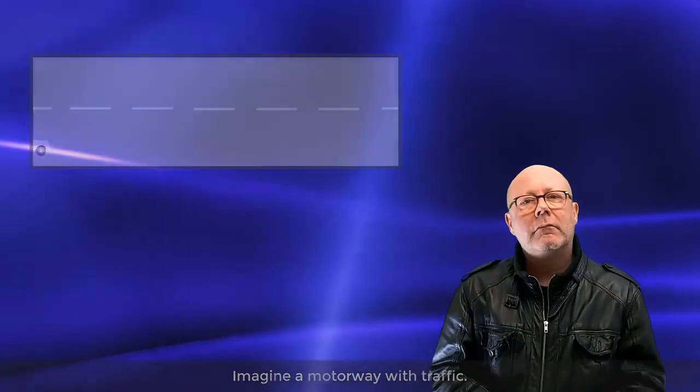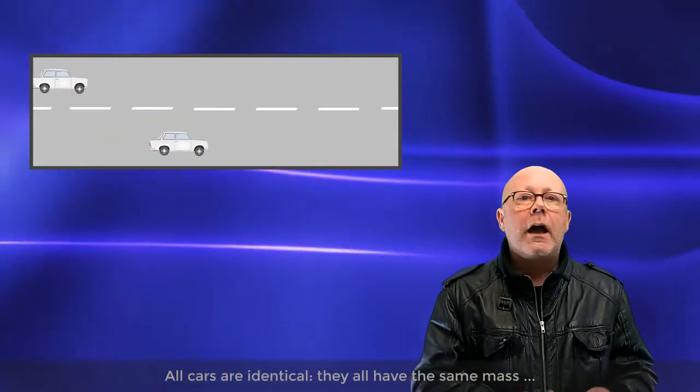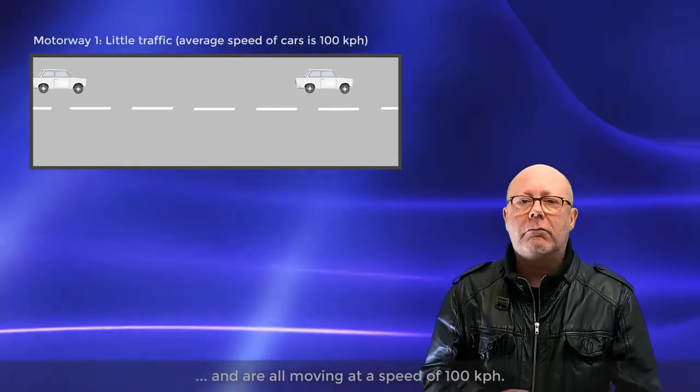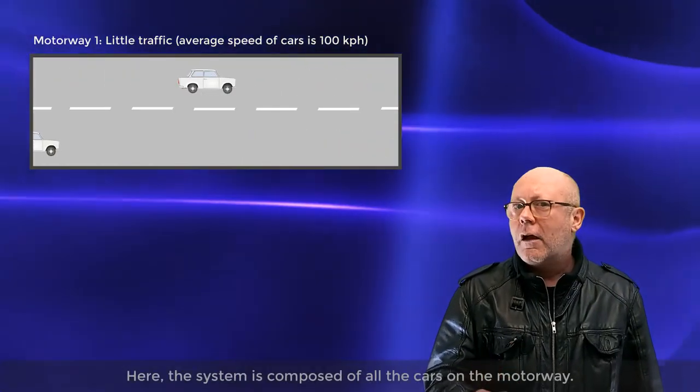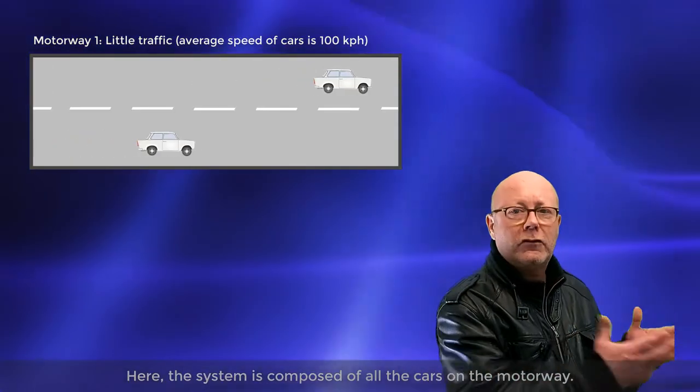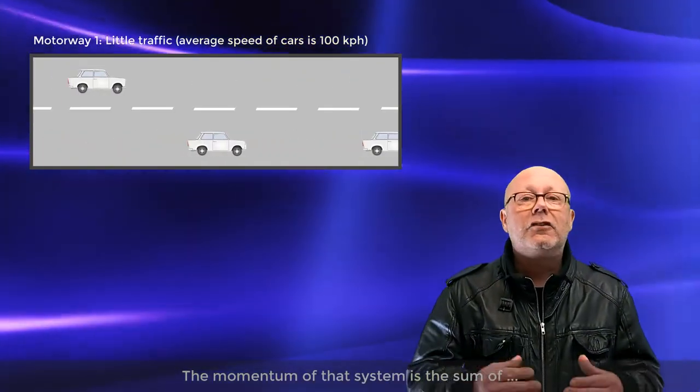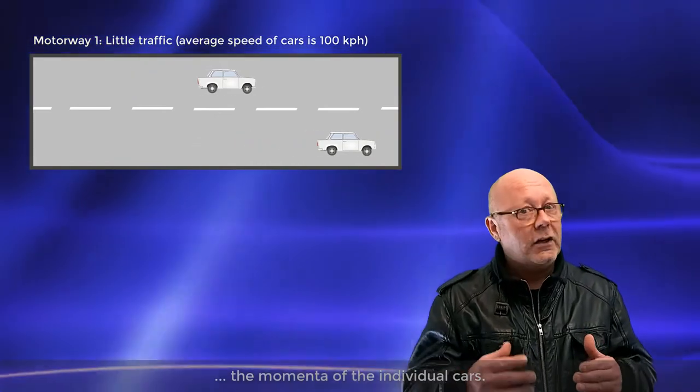Let me illustrate. Imagine a motorway with traffic. All cars are identical. They all have the same mass and are going at 100 kph. Here, the system is made of all the cars on the motorway, and the momentum of that system is the sum of the momenta of the individual cars.